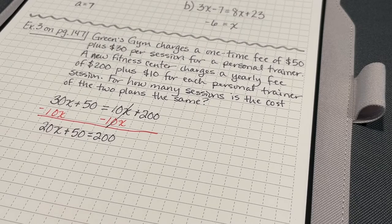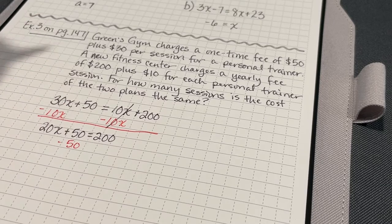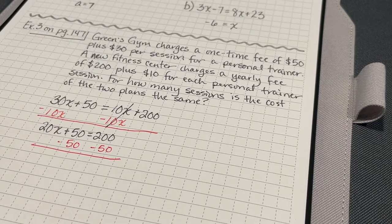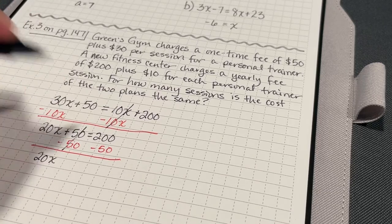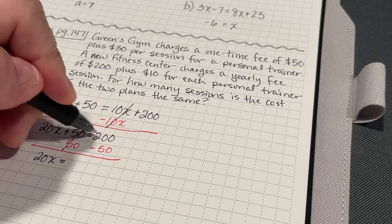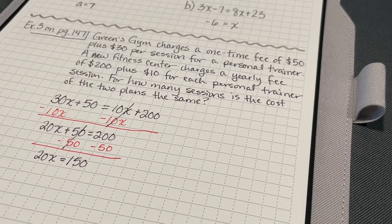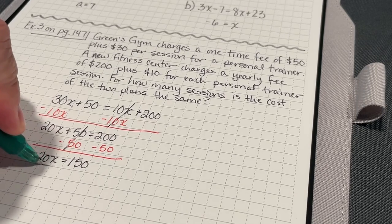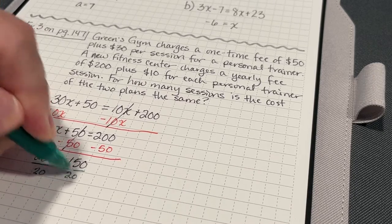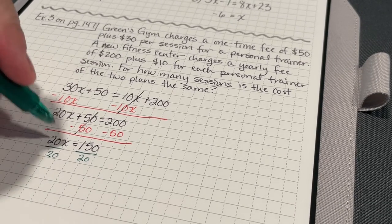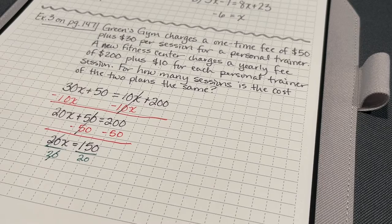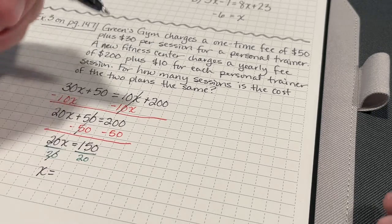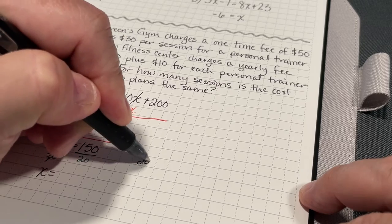Okay. My next step is that I'm going to subtract 50 from both sides. 20x. So, now I'm left with 20x, and that cancels each other out, equals 150. So, now what I'm going to do is I'm going to divide both sides by 20. Alright. So, 20x divided by 20 is just going to be x, and 150 divided by 20. I'm just going to do this over here. 20 goes into 150.